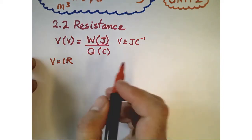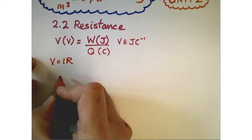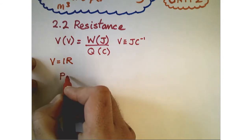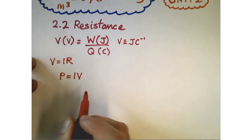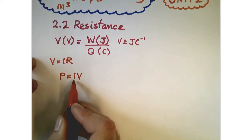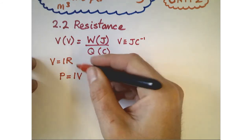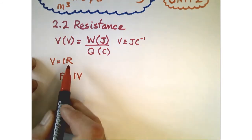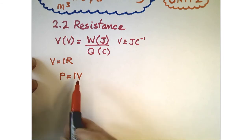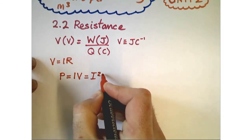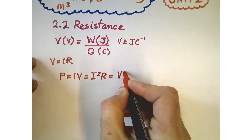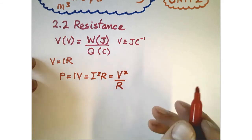And the other one is the power equation, and there's more than one form for this one. So P equals IV, that defines the power. Current times the joules per coulomb, so it gives you joules per second. And we can combine it with this one, and we can substitute for the I, or substitute for the V. So we get this version: I squared R, and we get this version: V squared over R.